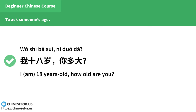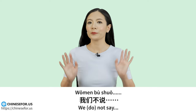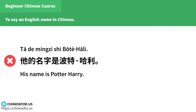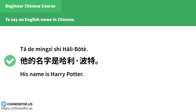To say an English name in Chinese: 我们不说「他的名字是波特哈利」，我们说「他的名字是哈利波特」。（First name comes before surname in Chinese transliteration of English names.）